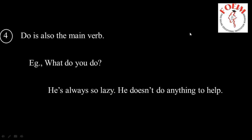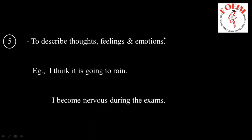We have already learned the forms of Present Simple. So let's move on to the usage of Present Simple. The first usage is: we use Present Simple to describe thoughts, feelings, and emotions. For example: I think it is going to rain — this sentence shows your thoughts. I become nervous during the exams — 'become nervous' shows your feelings.